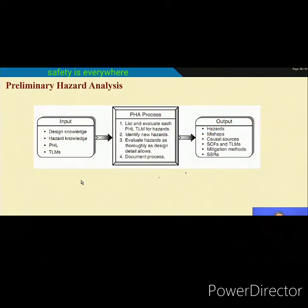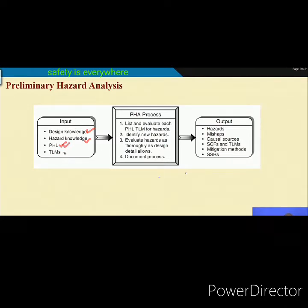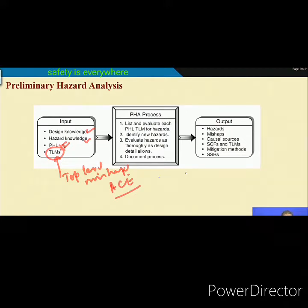The process diagram for PHA is similar to PHL. In PHL, the inputs were design knowledge, hazard knowledge, and lessons learned. In PHA, the inputs are design knowledge, hazard knowledge, the PHL itself, and top-level mishaps. For example, in the S missile system, one of the top-level mishaps is missile structure crash.